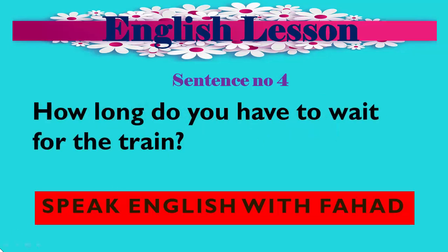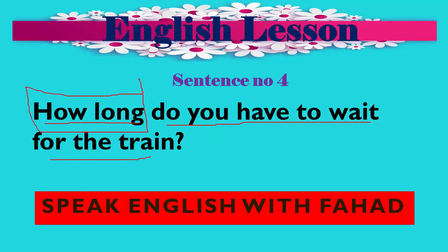Sentence number 4: 'How long do you have to wait for the train?' — آپ کو کتنے عرصے سے train کا انتظار کرنا پڑا۔ If we remove 'how long', it becomes: 'Do you have to wait for the train?' — کیا آپ کو train کا انتظار کرنا پڑا؟ 'How long' means کتنے عرصے سے / کتنے وقت سے. So: 'How long do you have to wait for the train?'